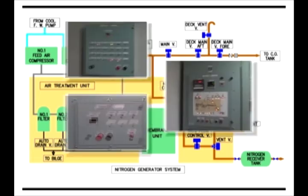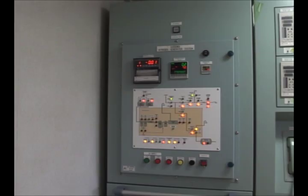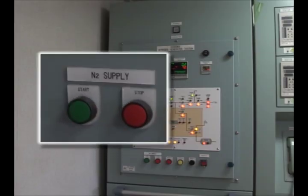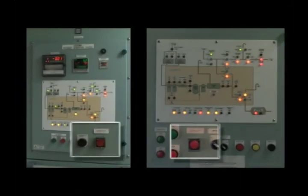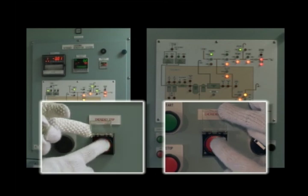Monitor panels are located in the ECR, CCR, and Wheelhouse, and are equipped with necessary indicators and alarms. Nitrogen gas can be supplied to cargo tanks or a nitrogen receiver tank by pressing the N2 Supply Start button found only on the CCR monitor panel. The emergency start button is located on the main control panel and the CCR monitor panel.